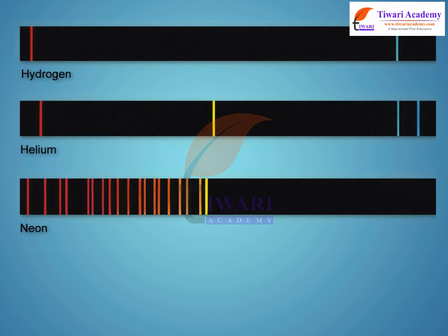Each element produces a unique set of spectral lines. Since no two elements emit the same spectral lines, elements can be identified by their line spectrum.